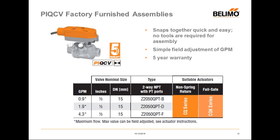The PI-QCV product range consists of three valves today: a max GPM value of 0.9, 1.9, and 4.3. At this point they're all half-inch valves, available with the CQ actuator in failsafe and non-failsafe options. The QCV product range also includes failsafe and non-failsafe actuators. On the PI-QCV, they snap together quickly and easily without tools, GPMs can be field-set, and they're covered by a five-year warranty.